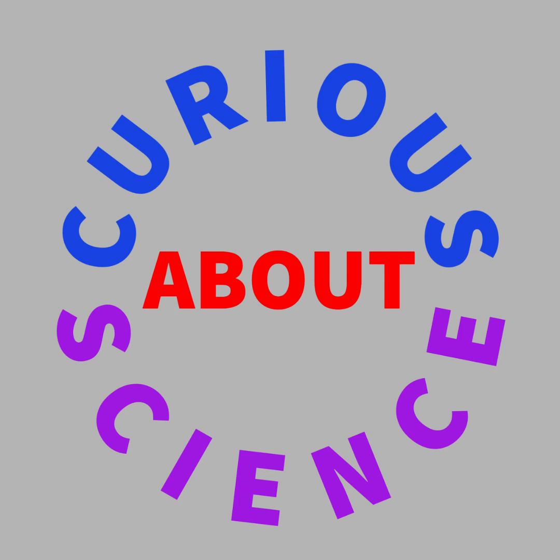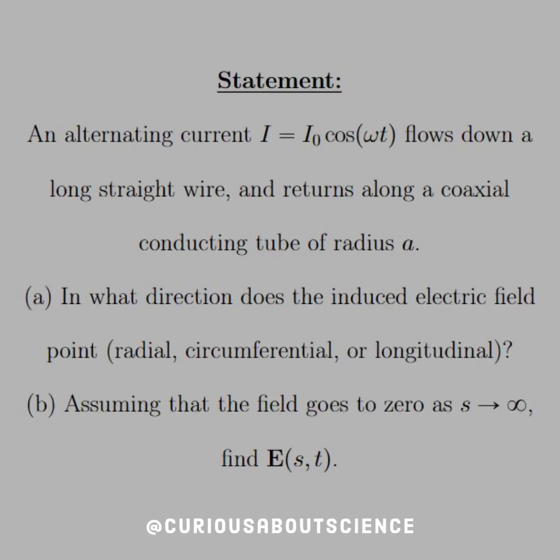Okay, so we've got another interesting question to deal with, so let's go ahead and dive in. The statement reads: an alternating current I equals I naught cosine omega t flows down a long straight wire and returns along a coaxial conducting tube of radius A.